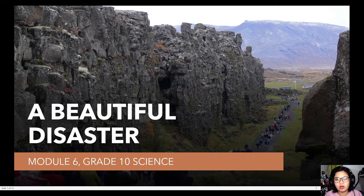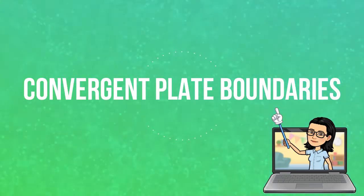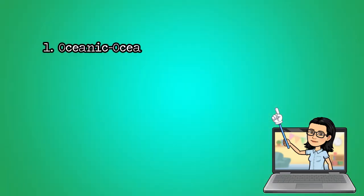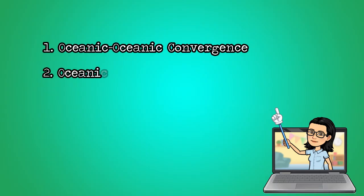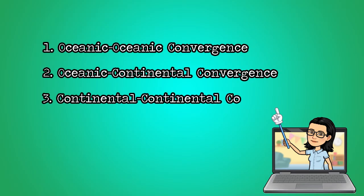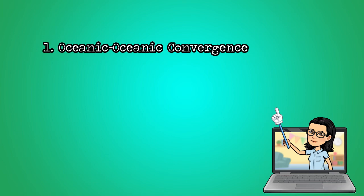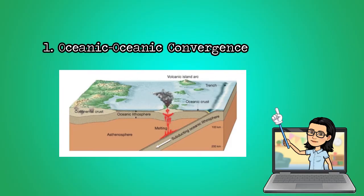This module is about Divergent Plate Boundaries and Transform Fault Boundaries. As you can remember, last week we finished discussing Convergent Plate Boundaries and its types: Oceanic-Oceanic Convergence, Oceanic-Continental Convergence, and Continental-Continental Convergence. We learned that Oceanic-Oceanic Convergence results in a volcanic island arc, a trench, and earthquakes.